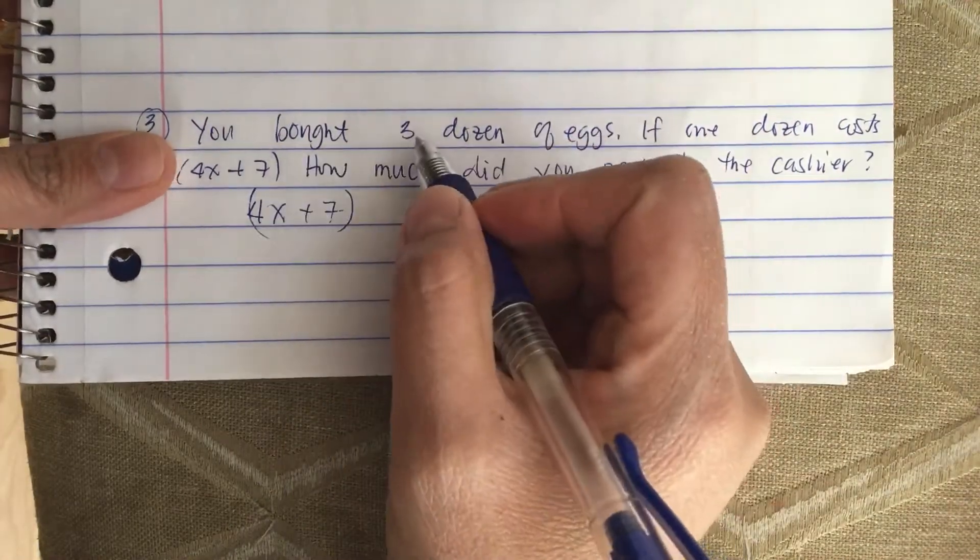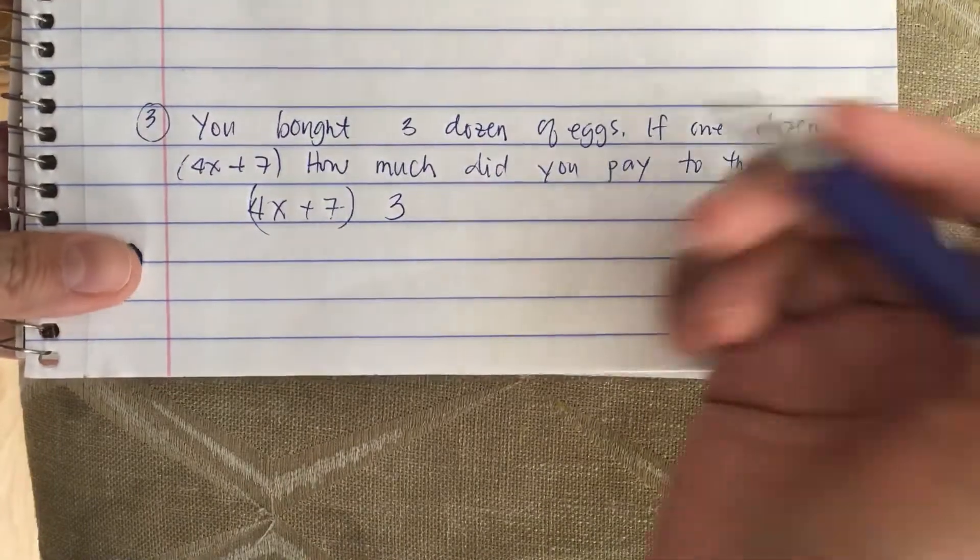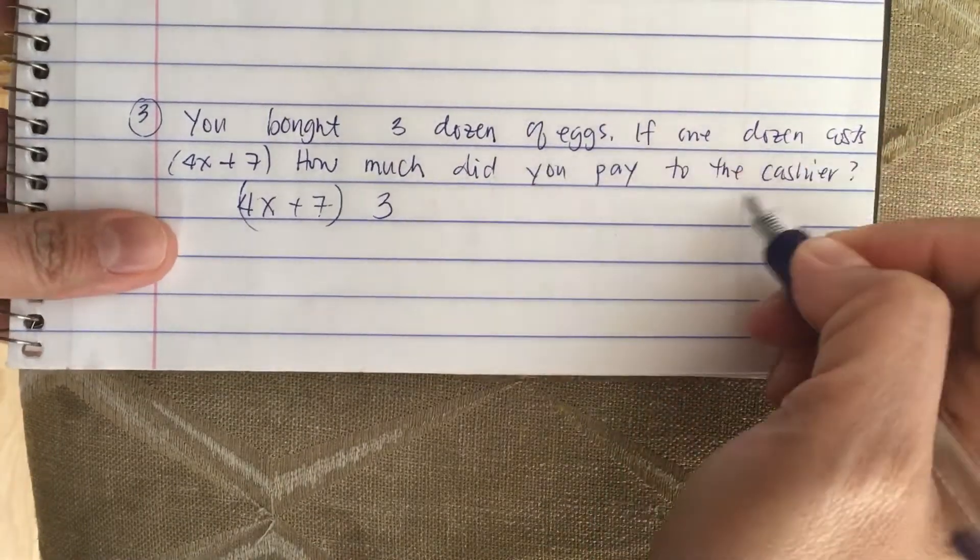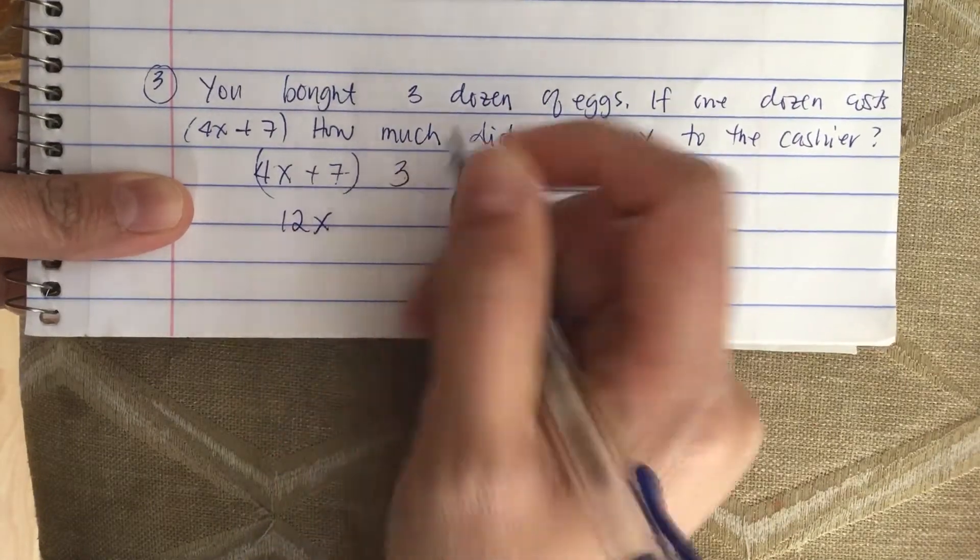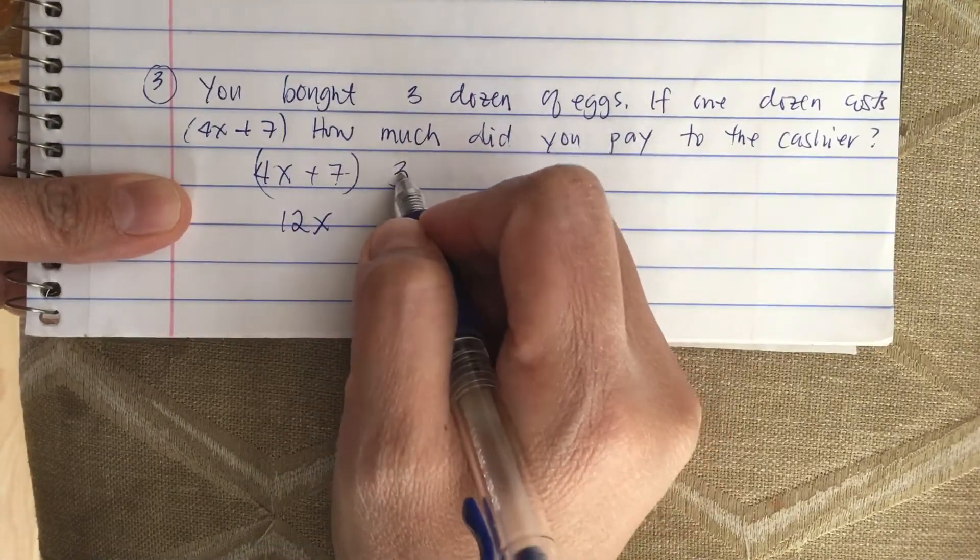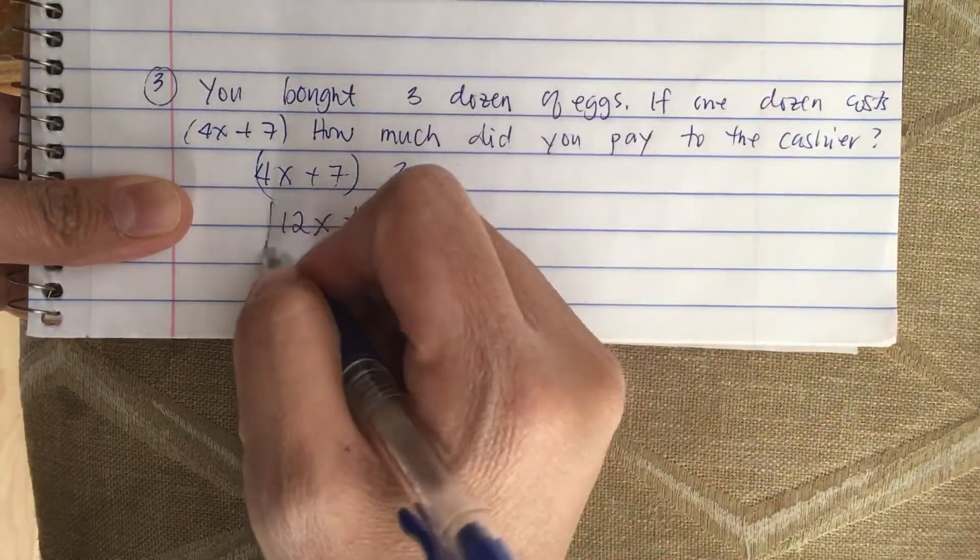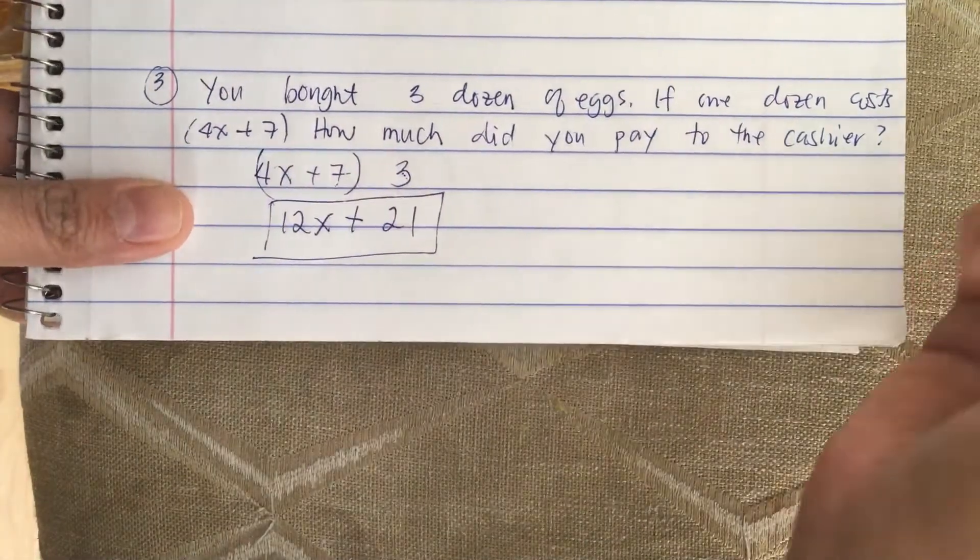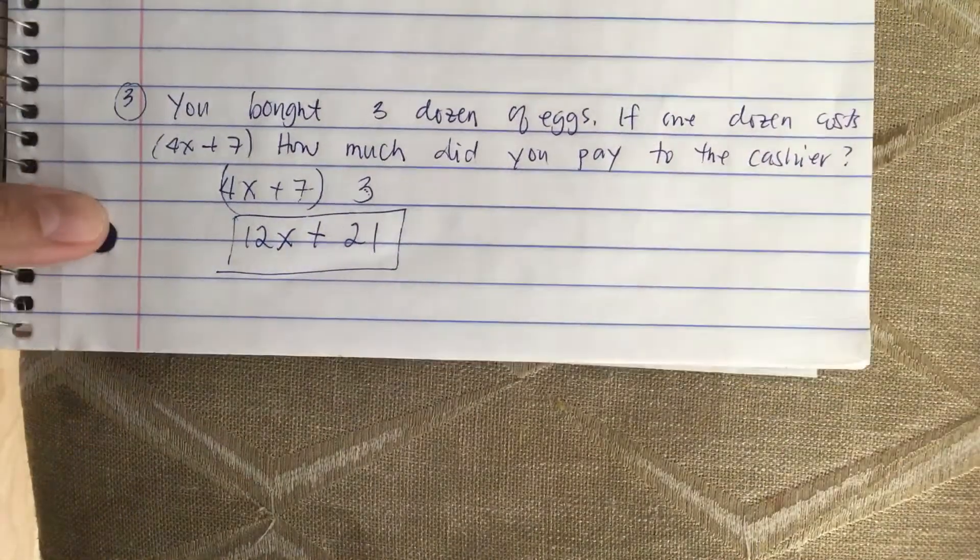Now you bought three dozen, so we multiply this by 3, and this gives us the answer. So 3 times 4x is 12x, and then 3 times 7 is plus 21. So we paid 12x plus 21 to the cashier.